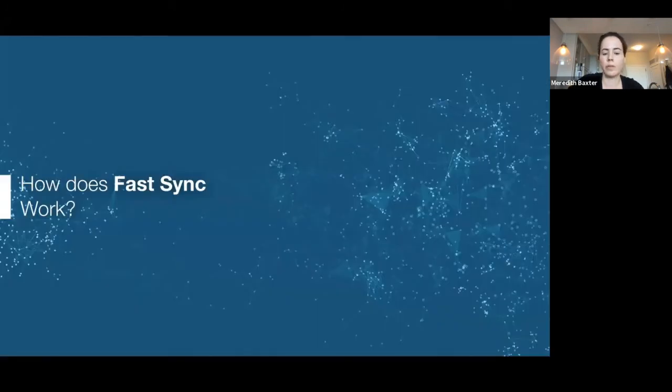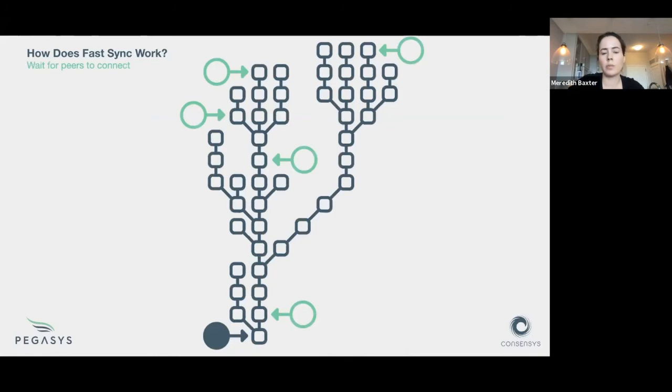And now for fast sync. Starting out, same kind of picture, there's some messy network and some number of peers. The first step in fast sync is to pick a pivot block. This is the point at which we switch from fast sync to full sync. The basic trade-off with fast sync is that it's fast, as the name suggests, but the security is a little bit lower. So basically at some point we want to switch back to full sync and do all the full validation, and the pivot is the point at which we do that.